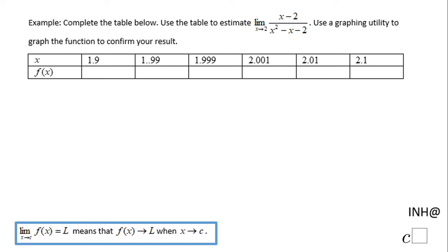Welcome or welcome back to Help at C Squared. In this example we need to find this limit: the limit when x approaches 2 of (x - 2) over (x² - x - 2). We're going to complete the table for doing that and then we're going to use a graphing utility to see if we are correct.